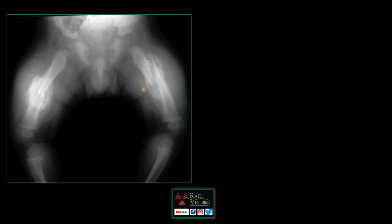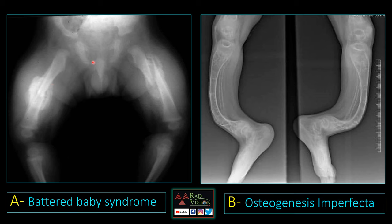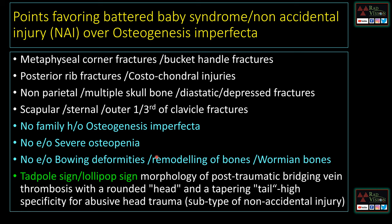The companion case shows typical bowing deformity of bilateral femurs, fractures, significant growth arrest lines, significant osteopenia, and bowing deformities of the visualized bones. The first case is battered baby syndrome and this companion case is osteogenesis imperfecta. We commonly confuse these two conditions, so we will go through the points which favor battered baby syndrome over osteogenesis imperfecta.